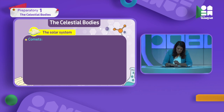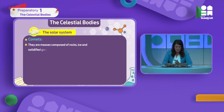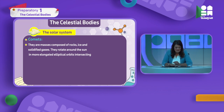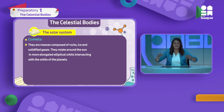Next are comets. Comets are smaller. They are celestial bodies - masses composed of rock, ice, and solidified gas. The solidified gas means gas that is frozen due to extreme cold. They rotate around the sun in a certain orbit - a more elongated elliptical orbit that intersects with the orbit of the planets.